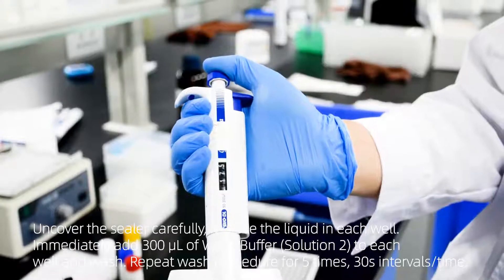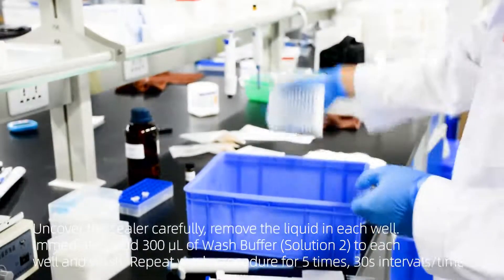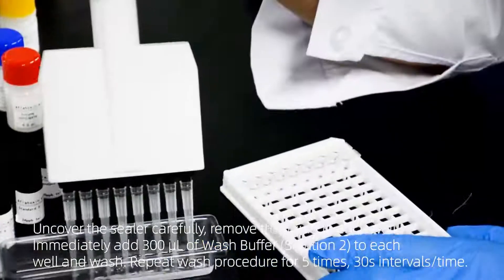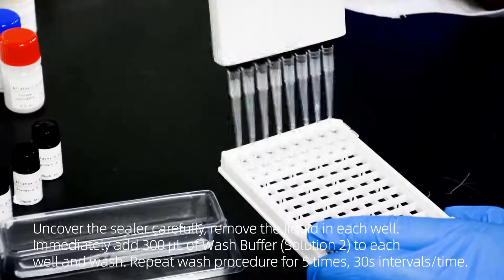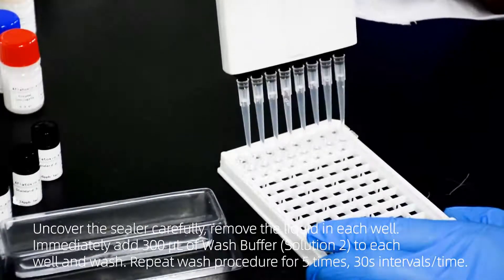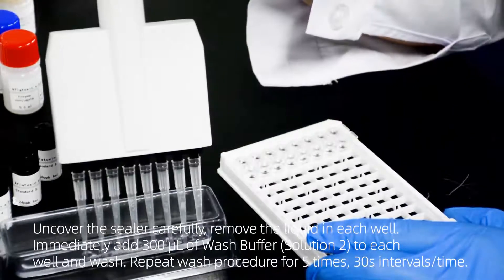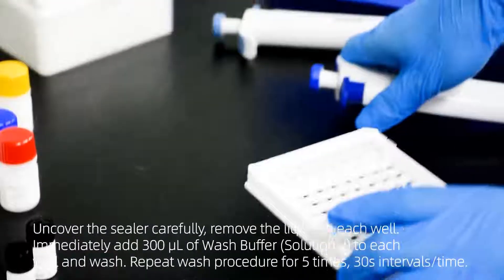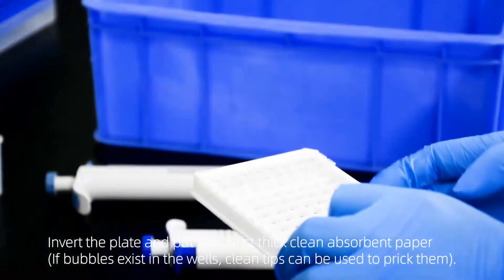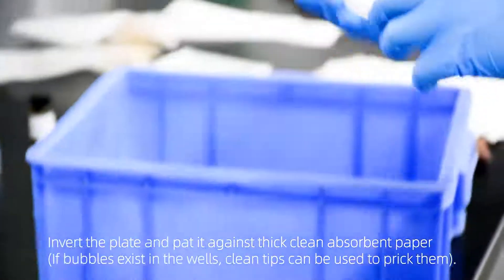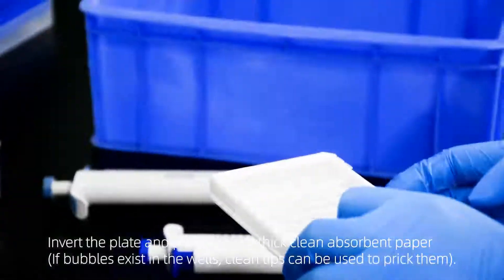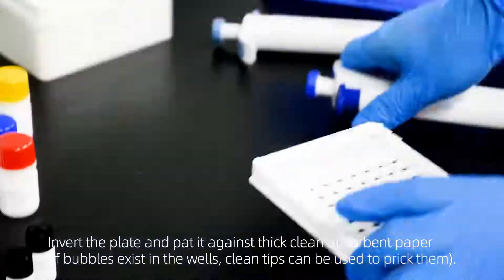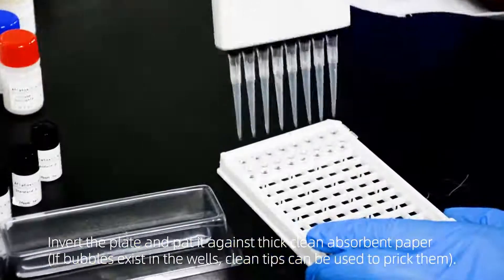Remove the sealer carefully and discard the liquid in each well. Immediately add 300 microliters of wash buffer solution to each well. Repeat wash procedure for 5 times with 30 seconds intervals. Invert the plate and pat it against thick clean absorbent paper. If bubbles exist in the wells, clean tips can be used to prick them.